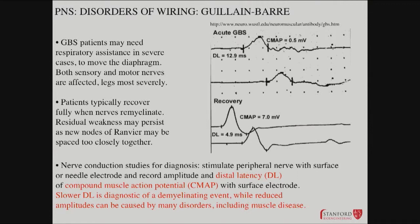Going back to Guillain-Barré — what do you see if you do that? You can measure things like the distal latency: the latency to recording that electrical response in the muscle of the thumb. You can also measure the amplitude of the compound muscle action potential, CMAP. Normally, there is a short latency of 4.9 milliseconds to the onset of this muscle action potential.